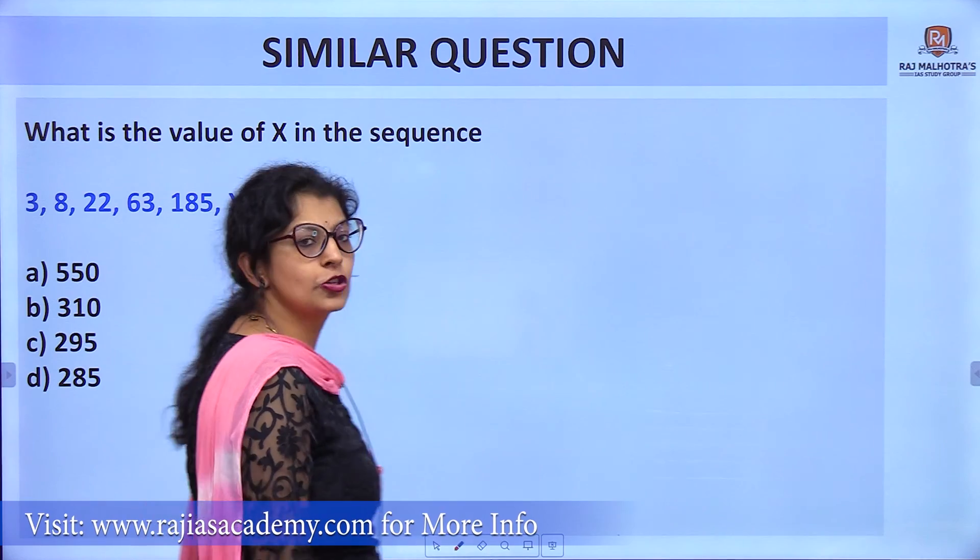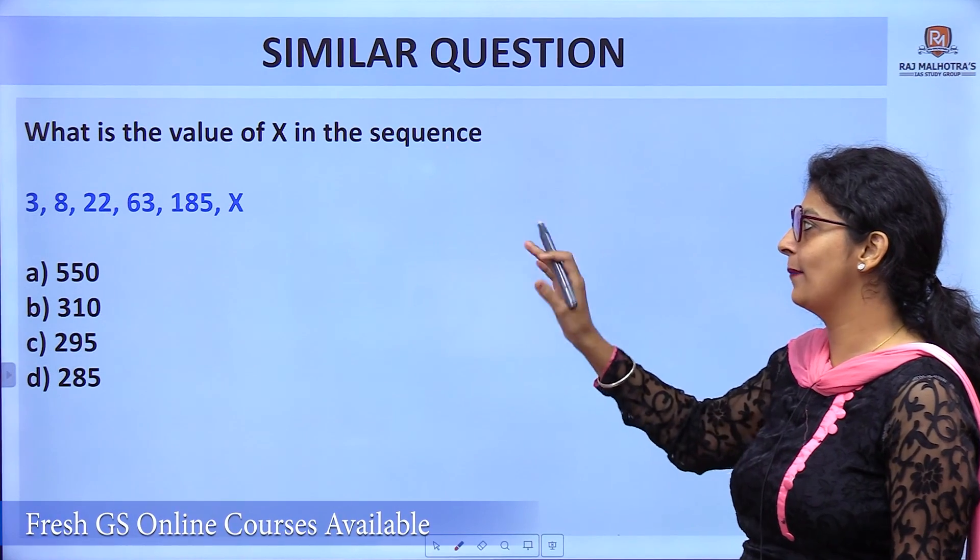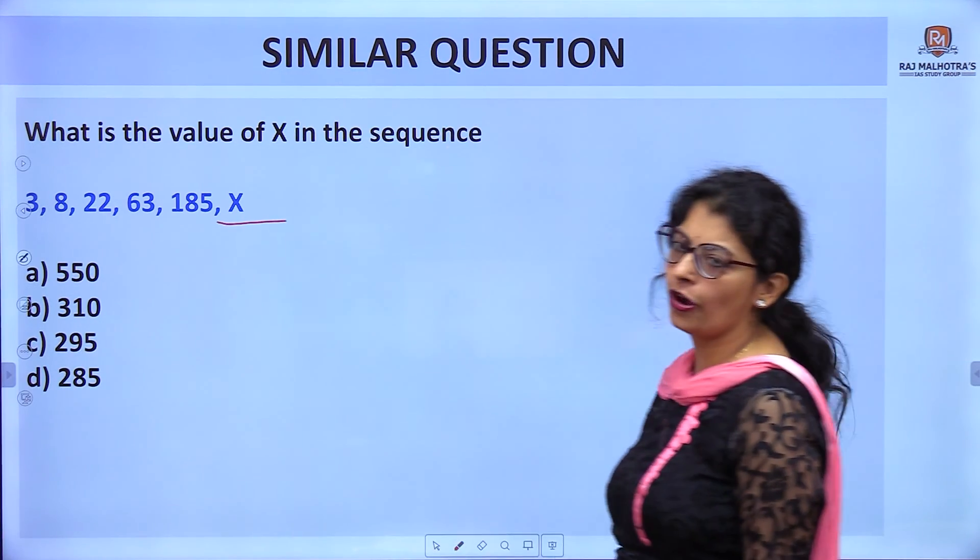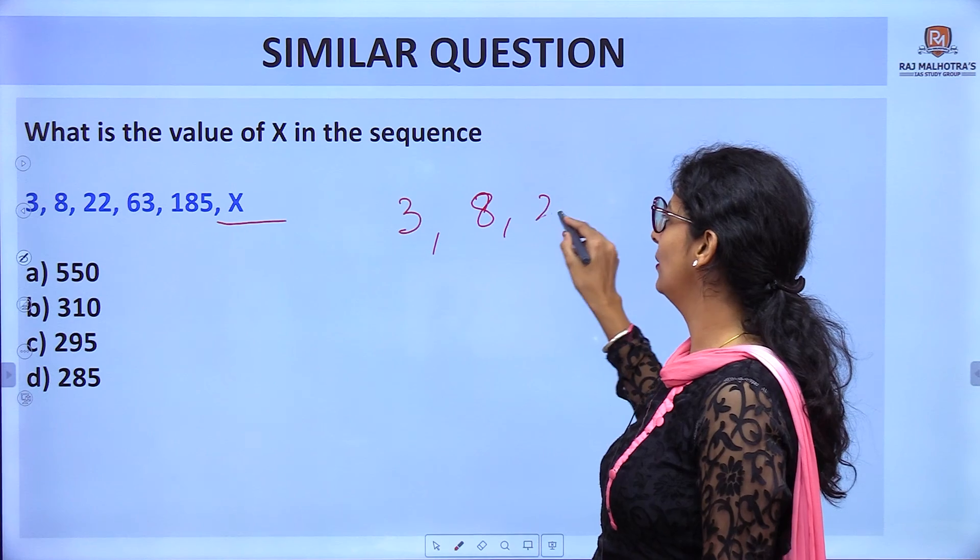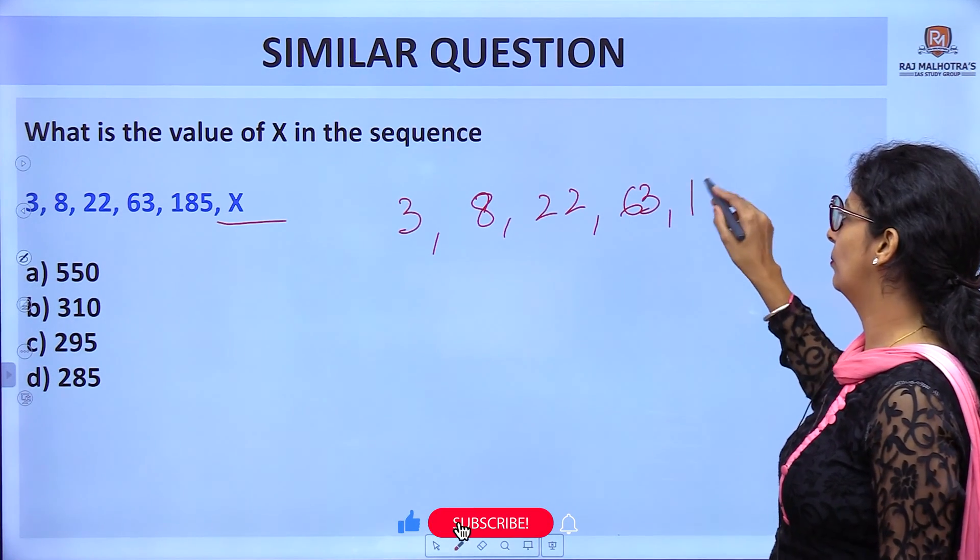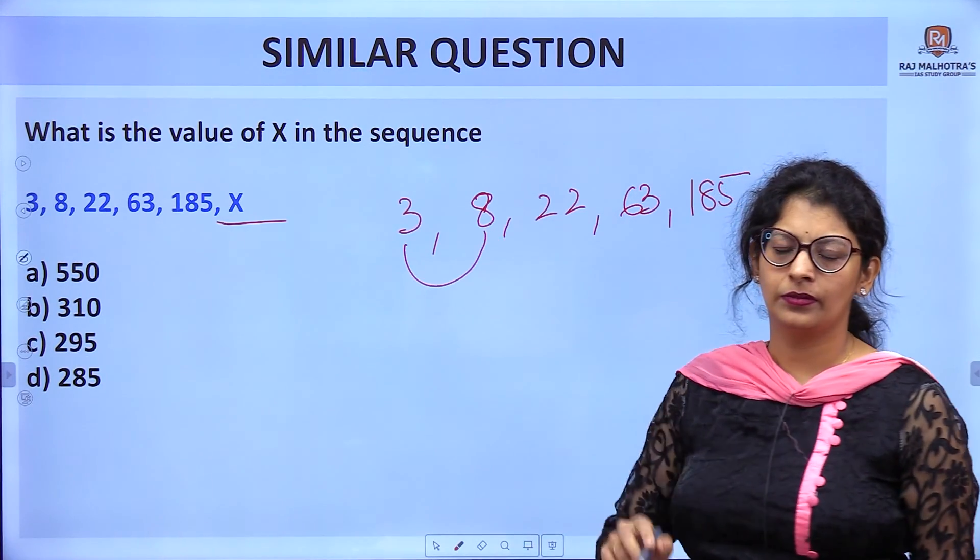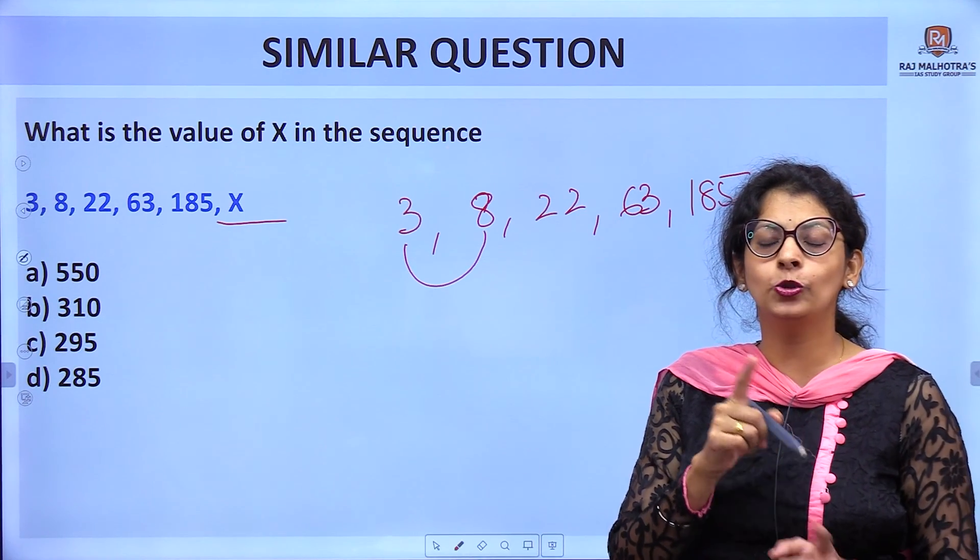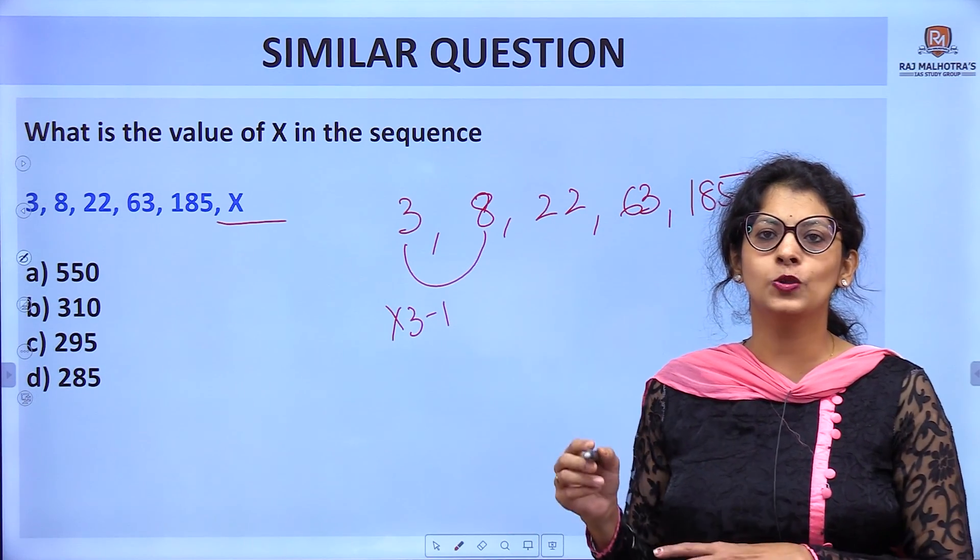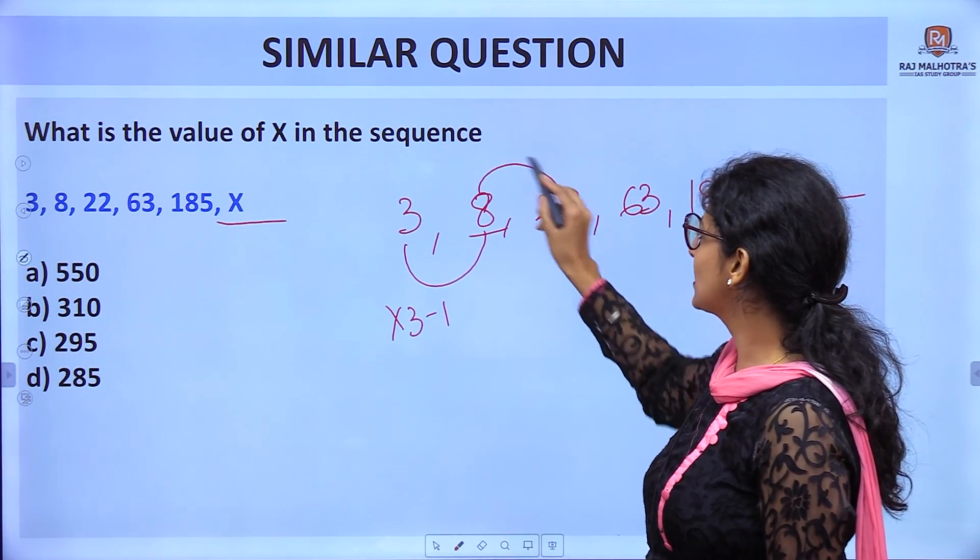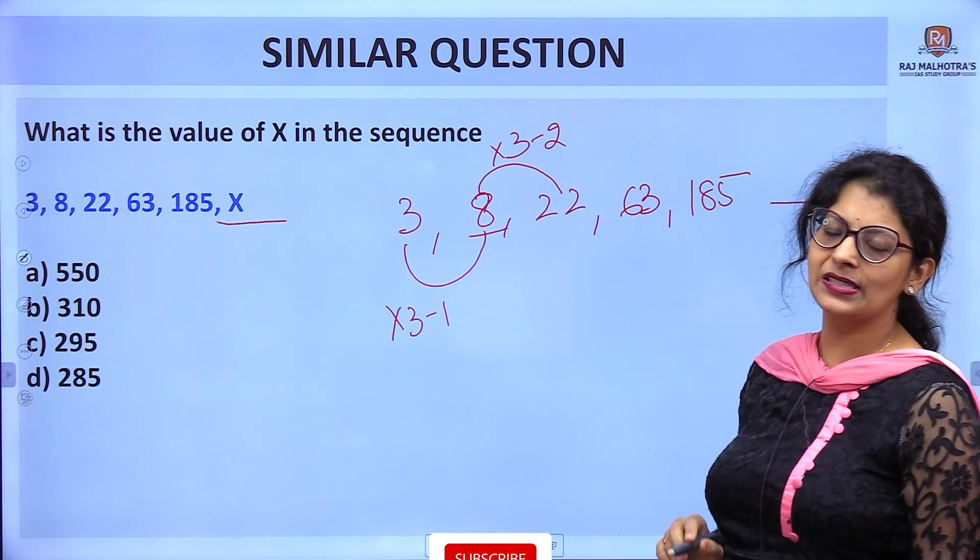Let's move to a similar question. The series is 3, 8, 22, 63, 185, x. We have to find the value of x. In this case there is multiplication and subtraction. From 3 to 8: 3 × 3 = 9, minus 1 = 8. Next: 8 × 3 = 24, minus 2 = 22.